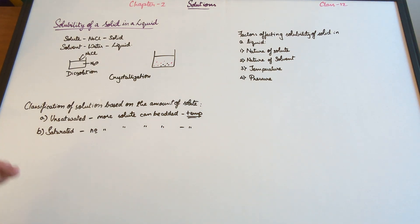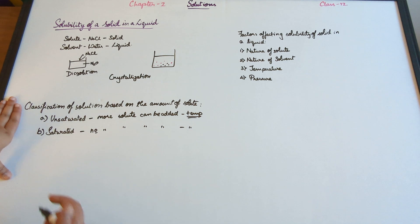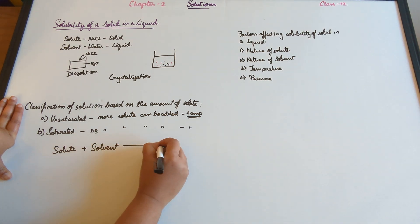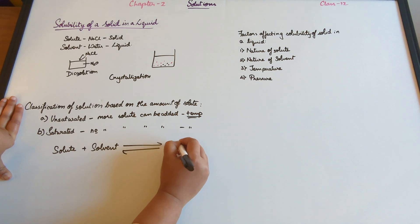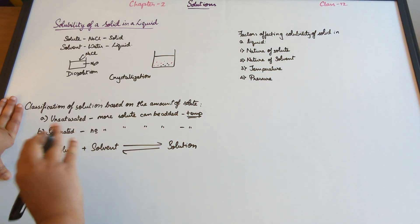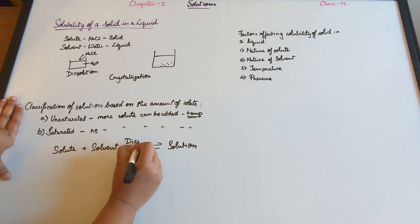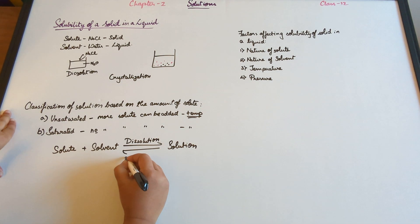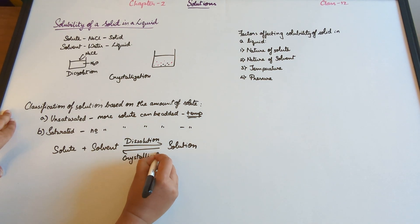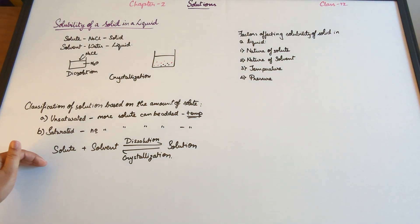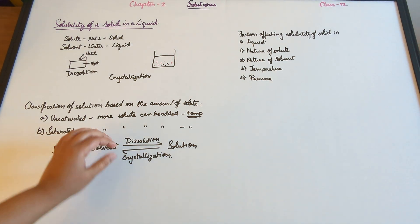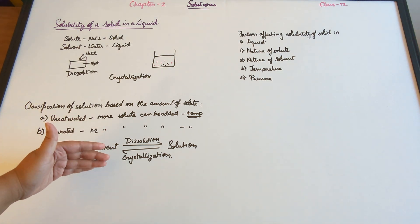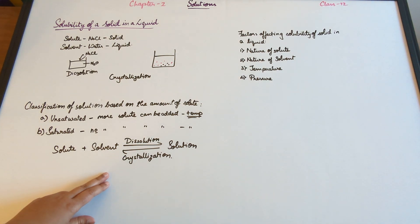In a saturated solution, two processes constantly take place. The equilibrium equation is: solute + solvent ⇌ solution. The forward process — solute and solvent mixing to give solution — is dissolution, whereas the reverse — solution giving back solute and solvent — is crystallization. In a saturated solution, there is enough solute for both to take place simultaneously, and the number of molecules undergoing dissolution equals the number that get crystallized.